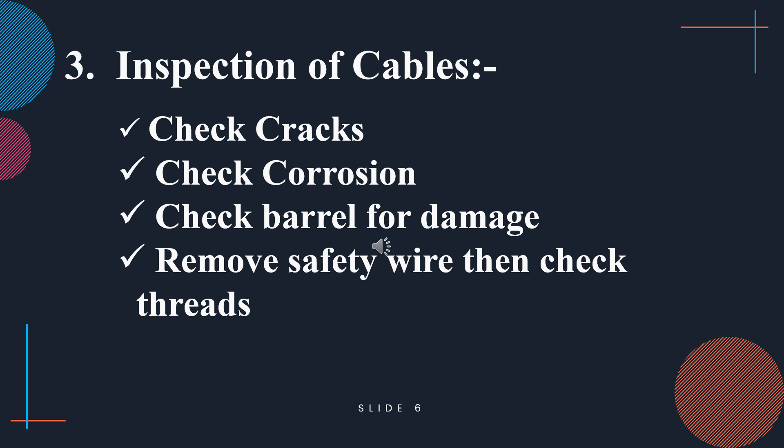To inspect a cable for internal damage, remove the cable from the aircraft and flex it manually while inspecting under a magnifying glass. Damage is indicated by broken wires or powdered oxidized metal on the surface. You can also examine the cable by rubbing it with a soft white cotton cloth — if the cloth snags, broken wires are present.